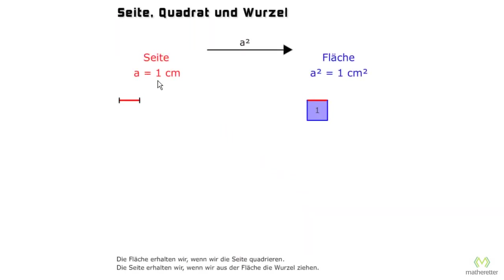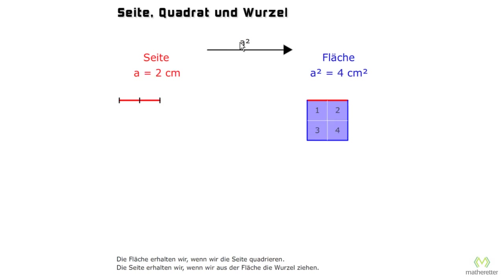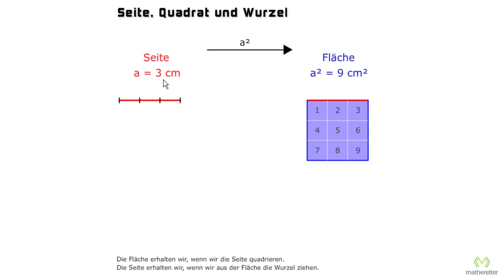If we have a side — in this example one centimeter — we can multiply this side by itself, so one times one, and we get a box. So we square side A. If we take two boxes, two squared is two times two, so we get four square centimeters, shown here as four boxes. At three centimeters we get three by three, so nine boxes, and that goes on forever.